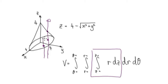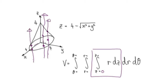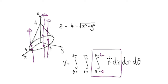So you enter at z equals 0 and then you leave the surface somewhere up here. The surface is given by this, so we could put the surface in here — that would then give us 4 minus, and don't forget, in cylindrical form, this whole thing here would be r.